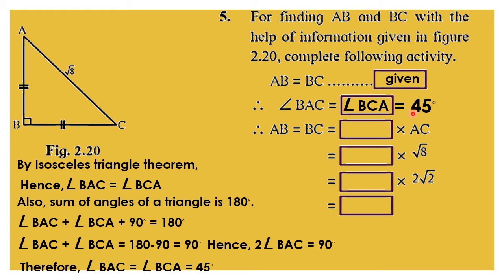Since both angles are 45 degrees, by the 45-45-90 degree theorem, AB = BC = (1/√2) × hypotenuse AC. Substituting AC = √8 = 2√2: AB = BC = (1/√2) × 2√2 = 2. The √2 terms cancel, giving AB = BC = 2 units.